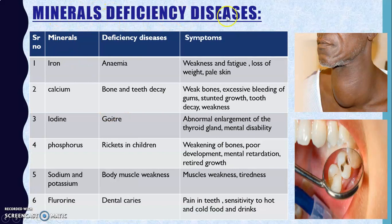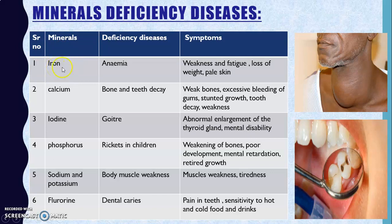Now let's look at mineral deficiency diseases. Minerals we studied include iron, calcium, iodine, phosphorus, sodium, and potassium. Iron is rich in green vegetables like spinach; iron deficiency causes anemia, with symptoms of weakness, fatigue, loss of weight, and pale skin — you will feel tired all the time if you are not eating green vegetables.